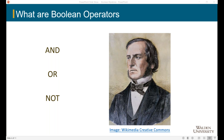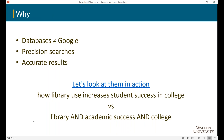The reason they're important in the library is because you have to explicitly tell the database how you're using them, as opposed to Google where they're pretty much assumed. That's the biggest difference between our Google-style search box on the library homepage and how you search in Google itself. Databases work like Google but not exactly like Google, so in order to do precision searches and get accurate results, you want to put your search together with AND, OR, and NOT.